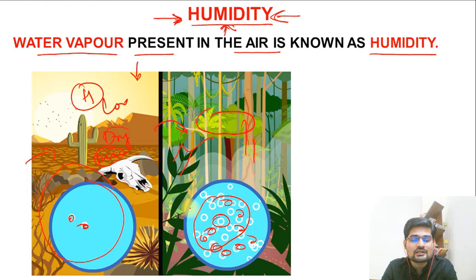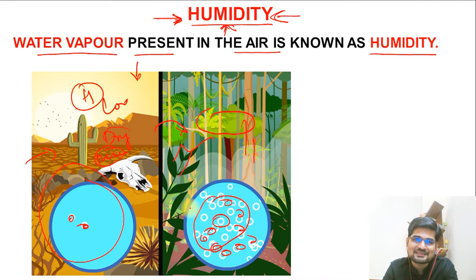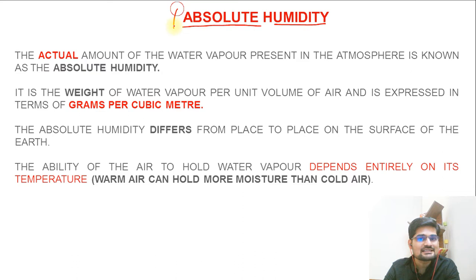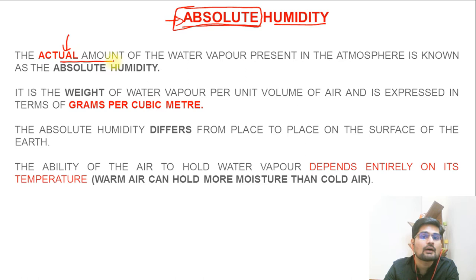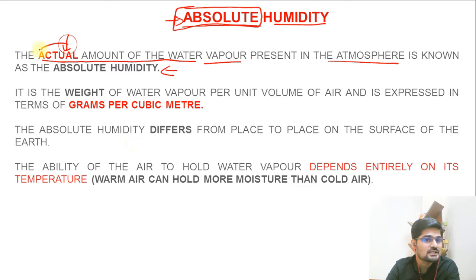Let's understand what humidity is, what are its various types and the factors related to this and why it is important in climatology. The first type of humidity that is important is called absolute humidity. When we say something is absolute, it basically means it is clearly measurable and clearly explainable - what it is exactly. It is the actual amount of water vapor present in the atmosphere. That is called absolute humidity. This 'actual' is the key here.